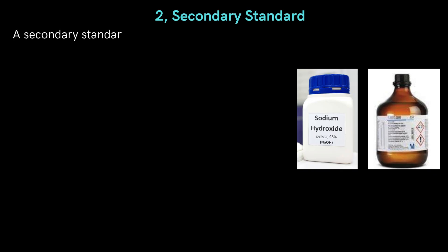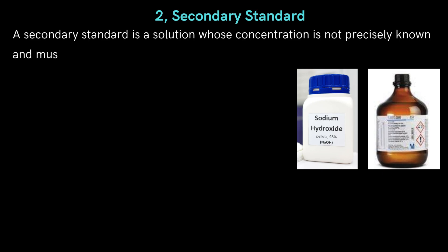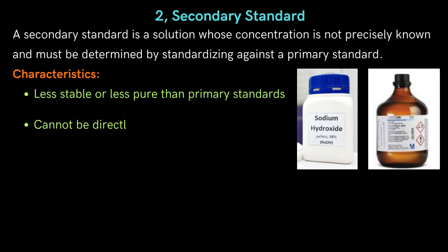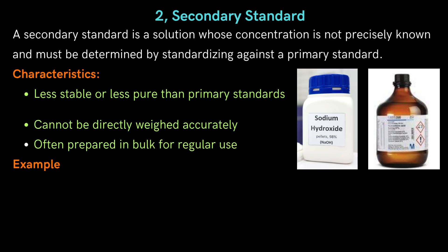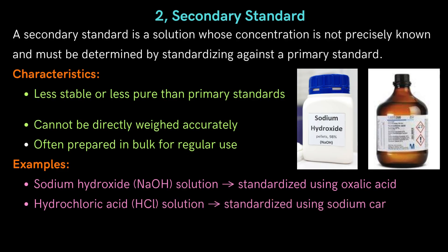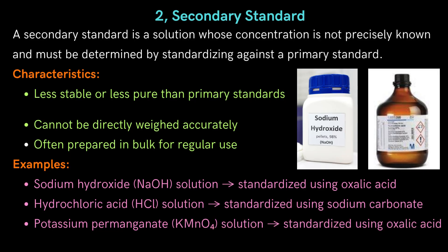We will now know the definition of a secondary standard substance. A secondary standard is a solution whose concentration is not precisely known and must be determined by standardizing against a primary standard. Characteristics: less stable or less pure than primary standards; cannot be directly weighed accurately; often prepared in bulk for regular use. Examples: sodium hydroxide (NaOH) solution standardized using oxalic acid; hydrochloric acid (HCl) solution standardized using sodium carbonate; potassium permanganate (KMnO₄) solution standardized using oxalic acid.